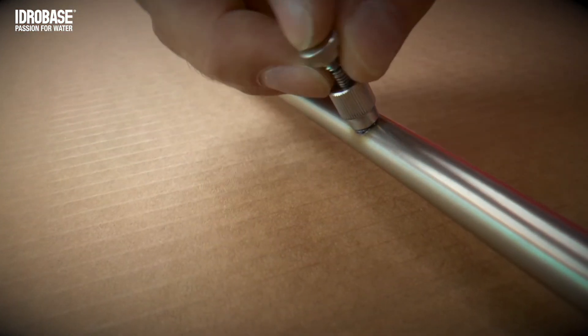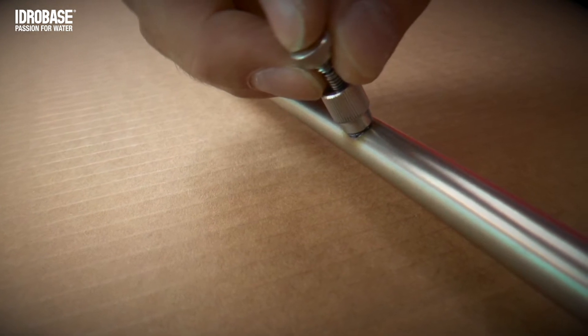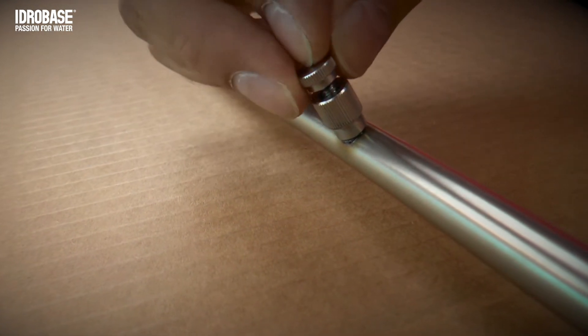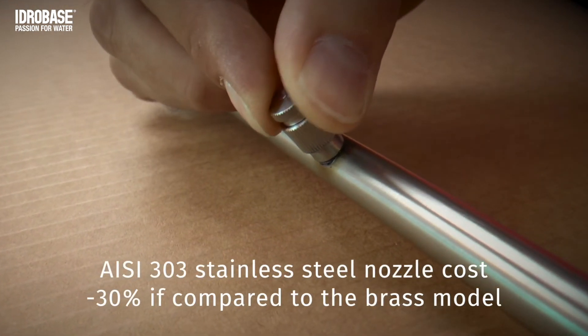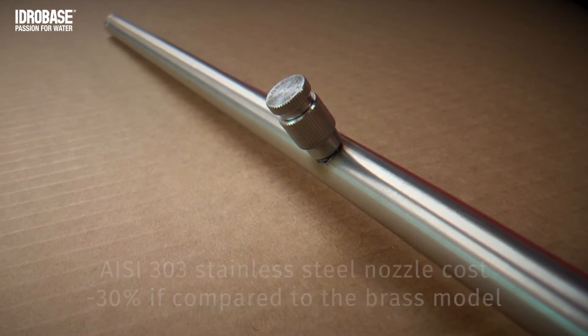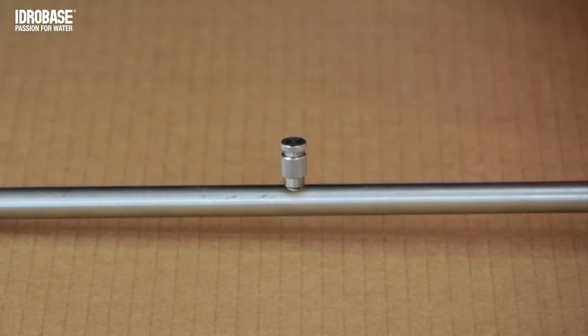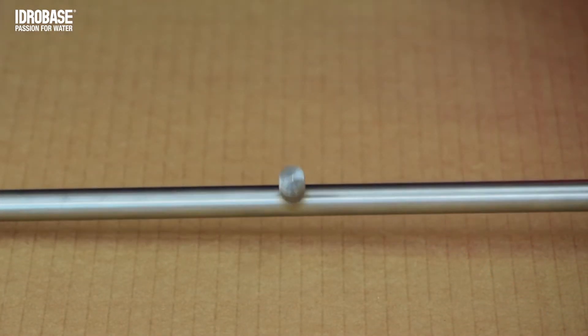The AISI 303 stainless steel nozzle costs 30% less compared to the brass model. This is the nozzle with no body, composed of the head and the anti-drip system that are placed on the adapter. 100 bars working pressure.